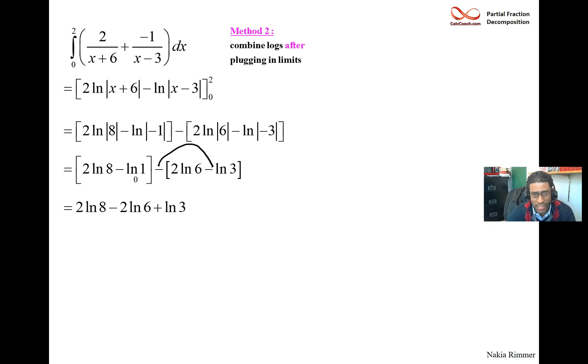Okay. And so combine the logs after plugging in the limits. So we've plugged in the limits, and now we combine the logs. So 2 log 8 minus 2 log 6 plus the log 3.